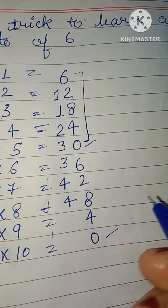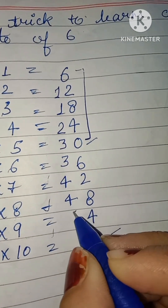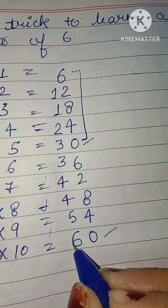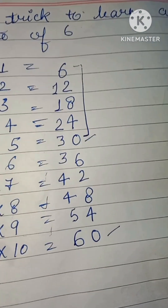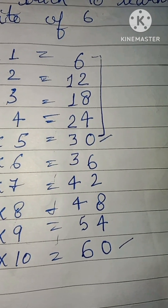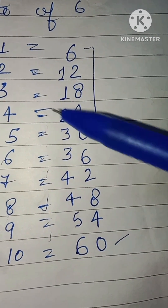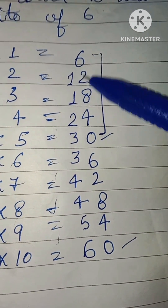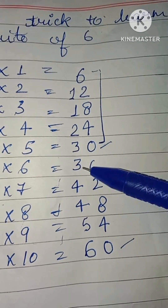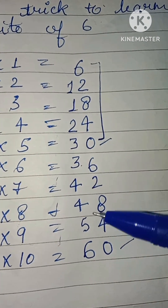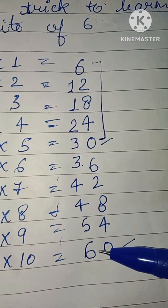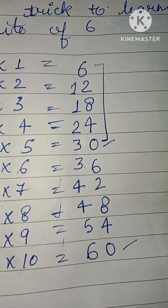Then one time five. Last one — everyone knows — the same number comes: six. So: two times one, one time two, two times three, two times four, one time five, and last one six — because it is the table of six. Whenever there is a table of eight, seven, or whatever number, the last number will be the same as the table number being asked.